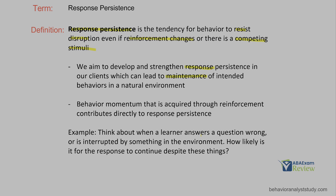Think about when a learner answers a question wrong or is interrupted by something in the environment. Let's say we answered five in a row correctly, and they get one wrong or there's a noise that distracts them — quickly they can go off track. Those responses we were seeing, if they're not strong, if they're not persistent, we can quickly lose track of what we're trying to do. The more response persistence, the more likely it is that given a disruption or a change in reinforcement, the more likely the response is to continue. Response persistence can also be for behaviors we don't want to see. So whenever you're analyzing a behavior, think about what's adding to the momentum of this behavior and why is the behavior persistent or why is it not.